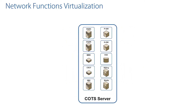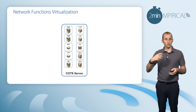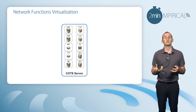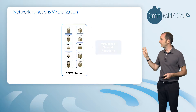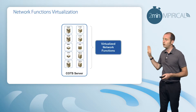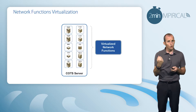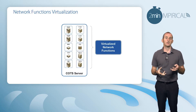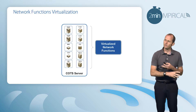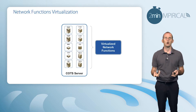That common piece of hardware is a common off-the-shelf server running the processing power required to push all of these various virtualized network functions. The processing power is based on something like the Intel x86 architecture, which is very commonly encountered across the world today.